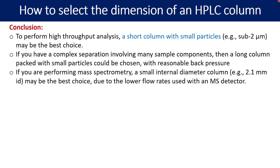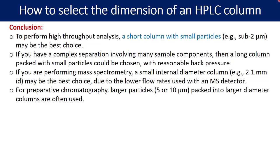If you are performing mass spectrometry, a small internal diameter column, example 2.1 mm ID, may be the best choice due to the lower flow rates required for the MS detection. For preparative chromatography, the larger particles like 5 micron or 10 micron packed into larger diameter columns are often used. The only point here is in case of preparative, especially as the diameter is higher, you may have to choose the higher flow rates.